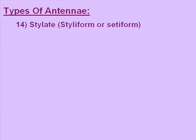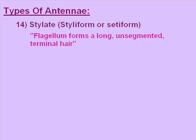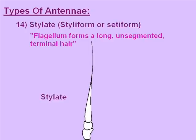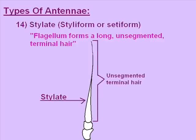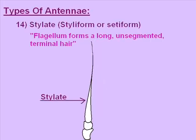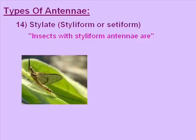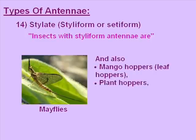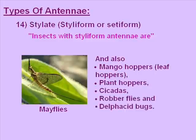The fourteenth type is stylate or stylate-form antenna. The flagellum forms a long, unsegmented, terminal bristle. In the picture we can see the flagellum is long and unsegmented like a terminal bristle, and the arrow points towards it. Insects with stylate antennae are male flies, mango hoppers also known as leafhoppers, planthoppers, cicadas, robber flies, and Delphax seed bugs.